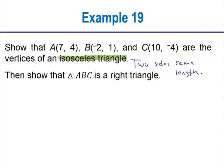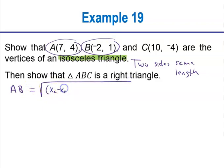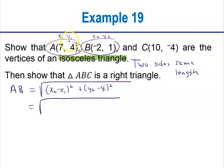So we better start finding the lengths of some sides. First, I'm going to find the length of line segment AB. Let's plug that in the distance formula: the square root of (x₂ − x₁)² plus (y₂ − y₁)². Which one do you want to be x₁ and which x₂? I tend to keep them in order — let's say A is x₁, y₁ and B is x₂, y₂. So we have: the square root of (−2 − 7)² plus (1 − 4)².